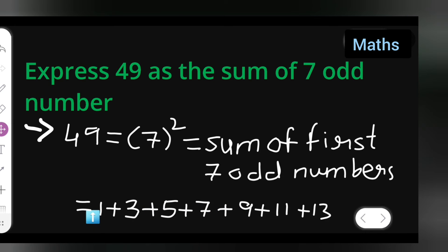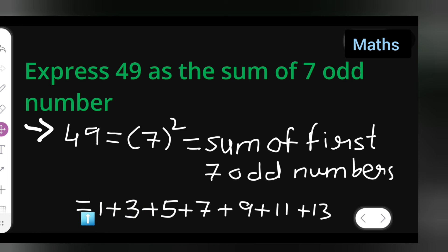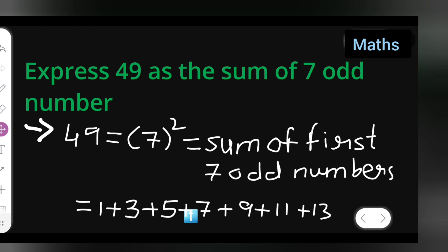These are the first 7 odd numbers, and this is how you express 49 as the sum of 7 odd numbers. You can add them and verify: 1+3=4, 4+5=9, 9+7=16, 16+9=25, 25+11=36, 36+13=49. You get 49, confirming these are the first 7 odd numbers whose sum is 49.